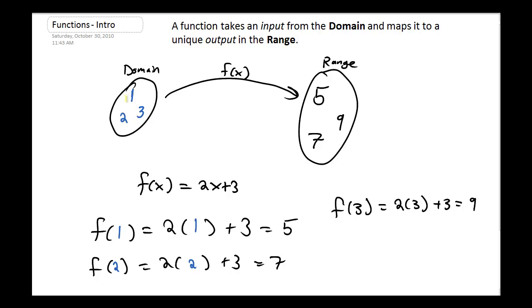To each input I get a precise output, and this output that I get is unique. 1 always goes to 5, 2 always goes to 7, 3 always goes to 9.